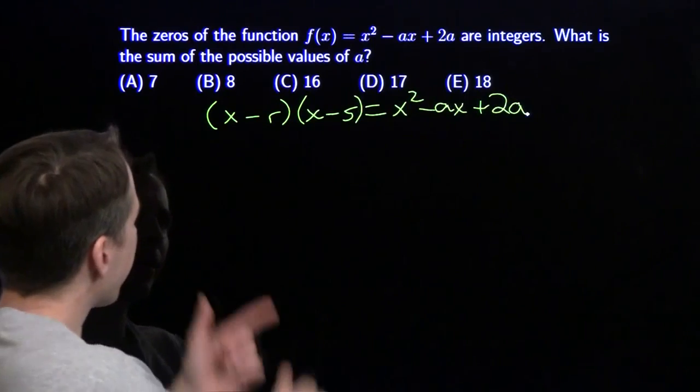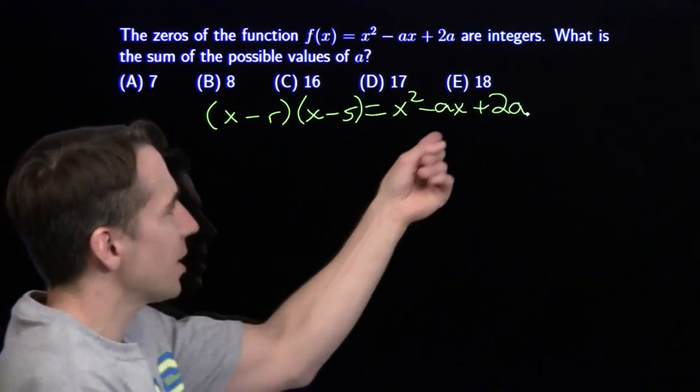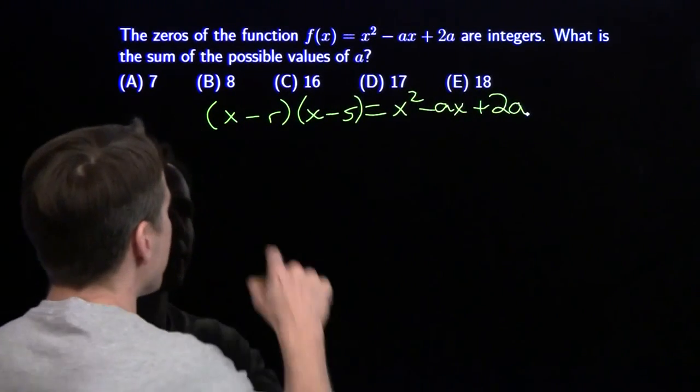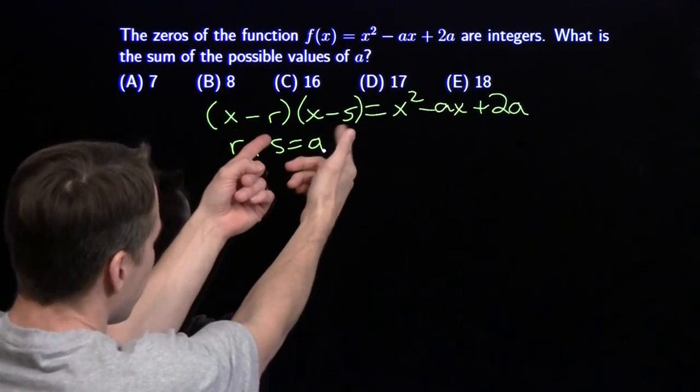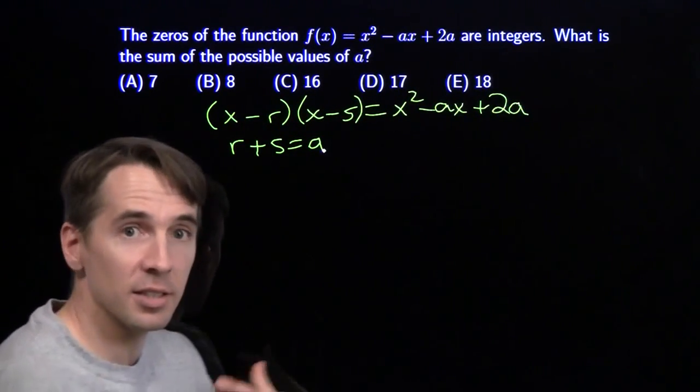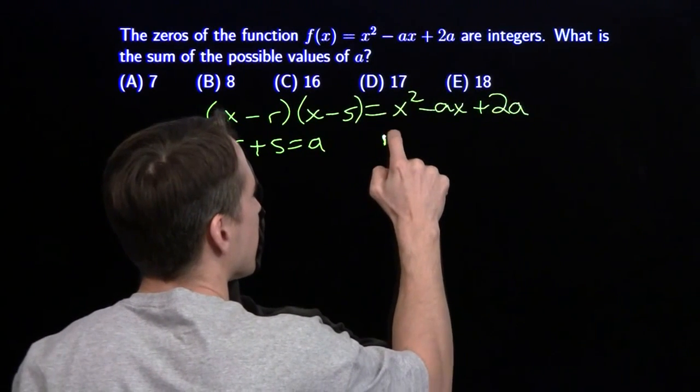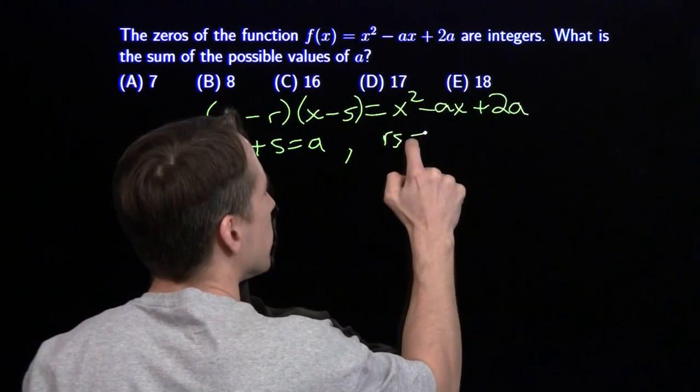If I multiply that out, I'm going to have -rx - sx, and that's got to match up with my -ax over there, so r + s equals a. For the constant terms, -r times -s gives rs, and that's equal to 2a.